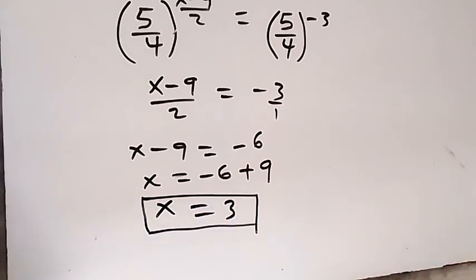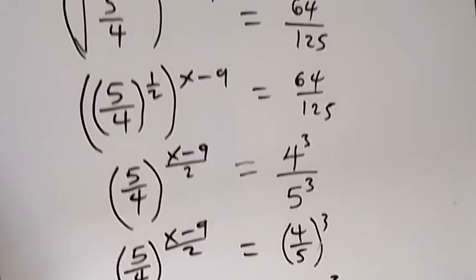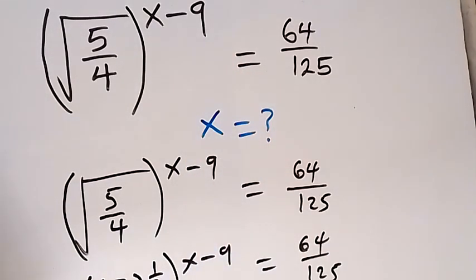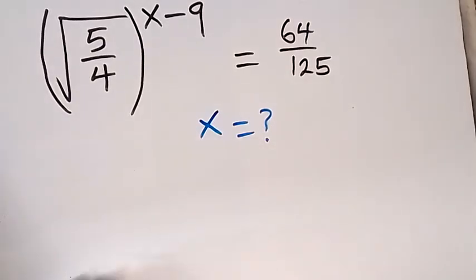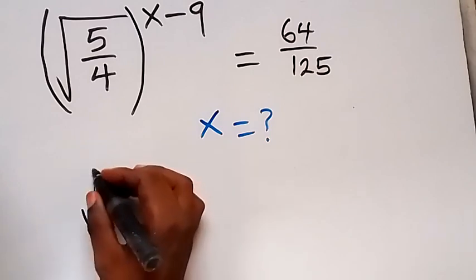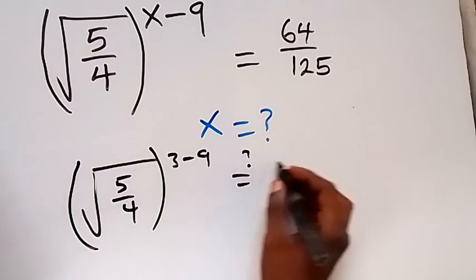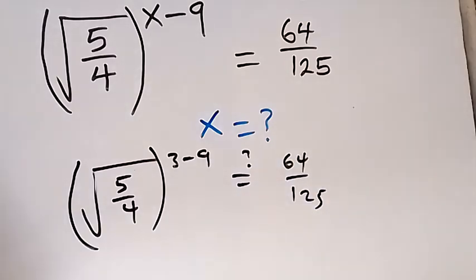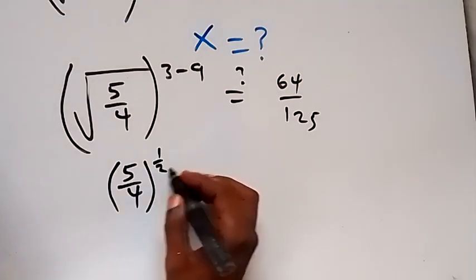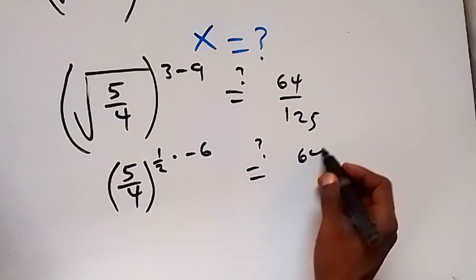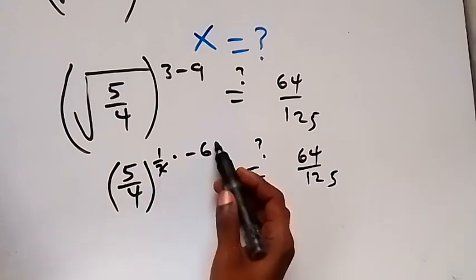So the value of x in this problem is 3, which we can also check to confirm the answer satisfies the given problem. From the given problem we have: square root of 5 over 4, all raised to power x minus 9, equals 64 over 125. When we put x equals 3, we have square root of 5 over 4 raised to power 3 minus 9. The square root is written as raised to power half, so we have 5 over 4 raised to half, then raised to 3 minus 9, that's minus 6.